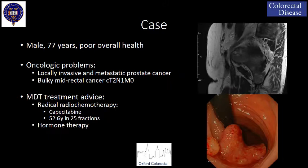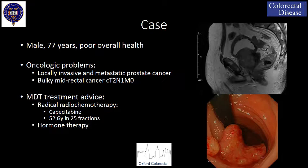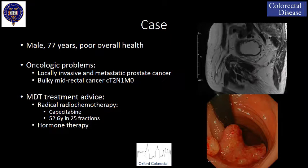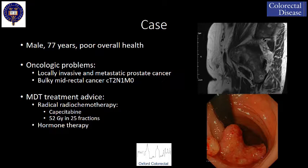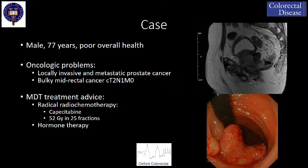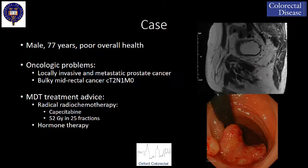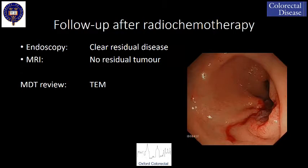The case we will present is that of a 77-year-old male with poor overall health. He has been diagnosed with a synchronous locally invasive and metastatic prostate adenocarcinoma and a bulky midrectal cancer. The multidisciplinary team meeting advised on radical radio chemotherapy combined with hormone therapy for the prostate. The patient tolerated the treatment well with only minor fatigue, mucus discharge and rectal blood loss.